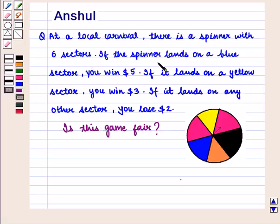If the spinner lands on a blue sector, you win $5. If it lands on a yellow sector, you win $3. If it lands on any other sector, you lose $2.